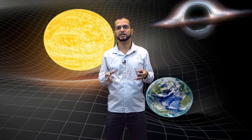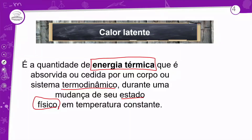Pode acontecer com ferro? Pode. O ferro tem três estados também — sólido, líquido e também pode vaporizar, amarrar numa temperatura muito elevada. Lembrando: mudança de estado físico. E também importante: a temperatura tem que se manter constante. Toda vez que eu falar calor latente, não vai mudar a temperatura — porque se muda a temperatura, é calor sensível.